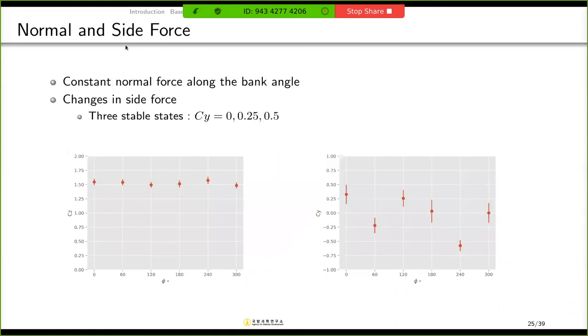And here, I compare the normal and side force with respect to bank angle. For normal force, when you change the bank angle, the normal force is almost constant. But for the side force, I can find three stable states. One is this one. The magnitude of the side force is about 0.25.